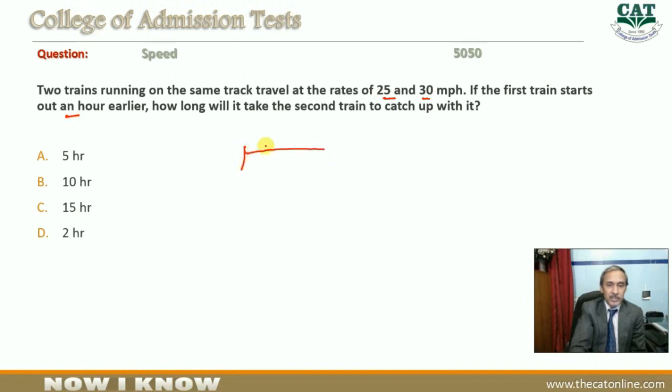The first train is going to travel at the rate of 25 miles per hour. The first train starts one hour earlier. The second train is going to travel at 30 miles per hour.